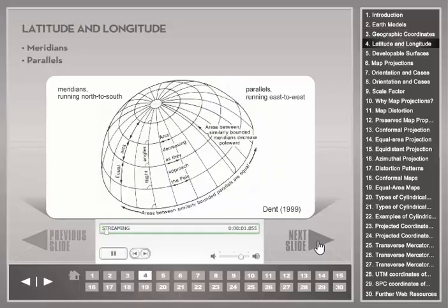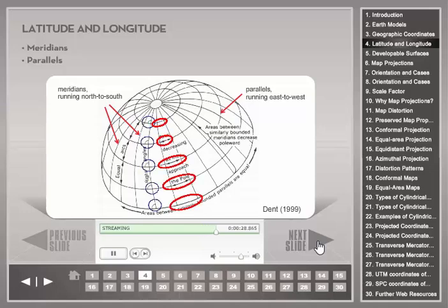The reference system that geographic coordinates are based on uses imaginary arcs on the Earth's surface called meridians and parallels. Meridians run in a north-south direction between the poles and form ellipses on the ellipsoid. Parallels run east-west at a constant distance from the equator and form circles on the surface of the ellipsoid. Meridians and parallels intersect at right angles. Because of the convergence of meridians at poles, parallels become smaller the farther they are from the equator.